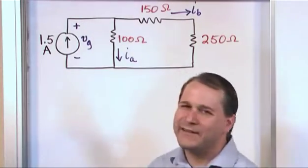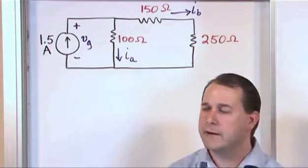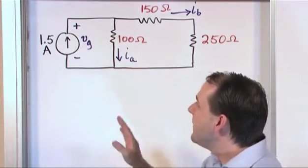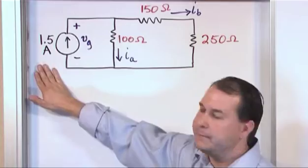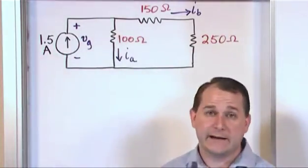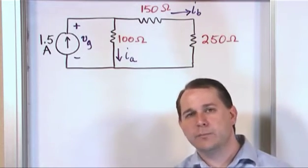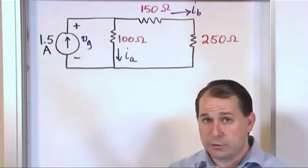A current source is really not something you'll see too much, but you'll see it in some laboratory components. Maybe I don't even care what voltage is over here, but all I know is that whatever I hook up over here, I want to make sure I get one and a half amps out of that source. So what happens is I dial the dial to 1.5 amps, and then I hook my circuit.